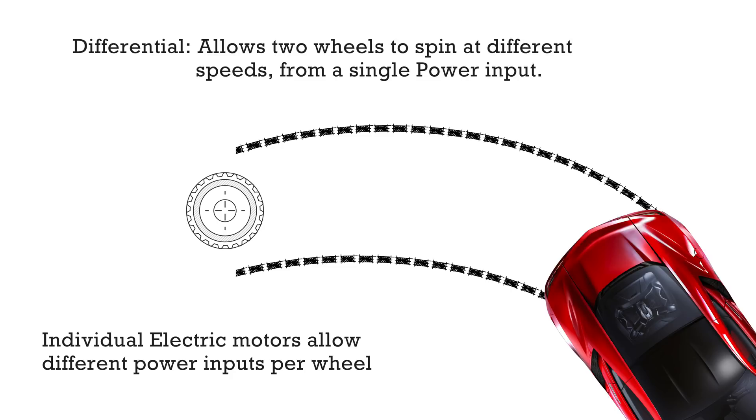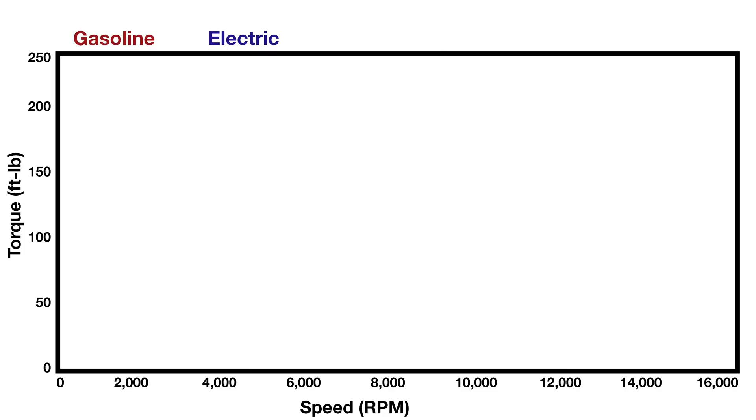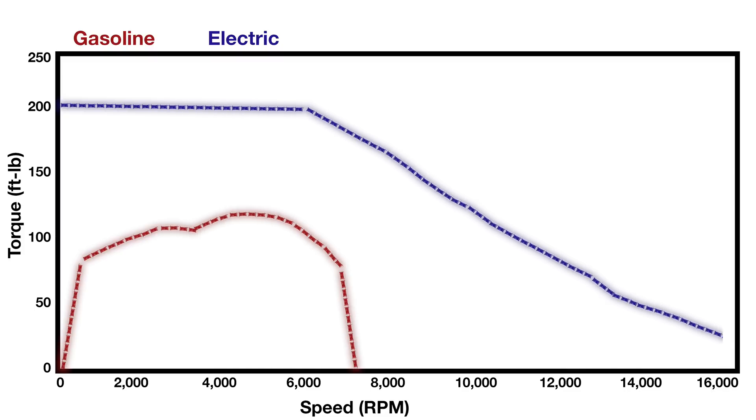The attribute about electric motors you've probably heard most about is their instant torque. To understand what this means, let's look at hypothetical horsepower and torque curves as a function of RPM for both an electric motor and an internal combustion engine. The first thing you'll notice is that the EV torque curve rises up to near its maximum output immediately at 0 RPM.